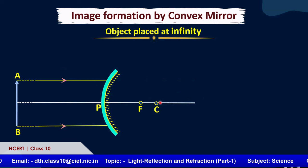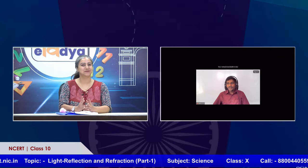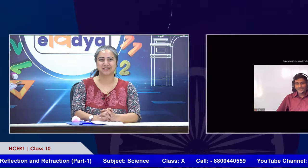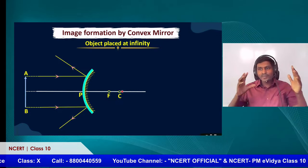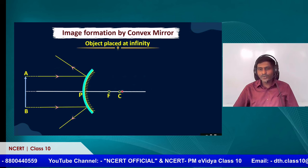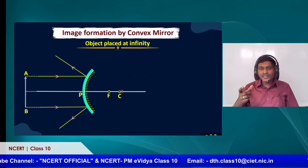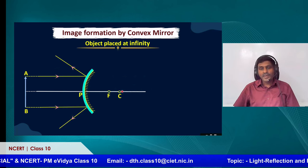We cannot continue this further in the current part since we don't have much time left, and there is another part coming where we can continue. Since the rays are diverging, the image looks different — we can get different shapes because of the position and also the type of mirror.